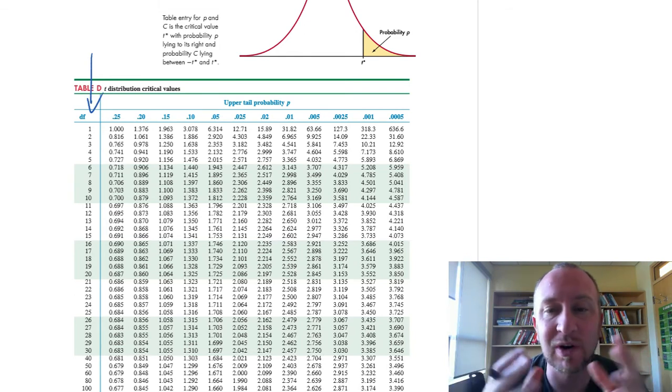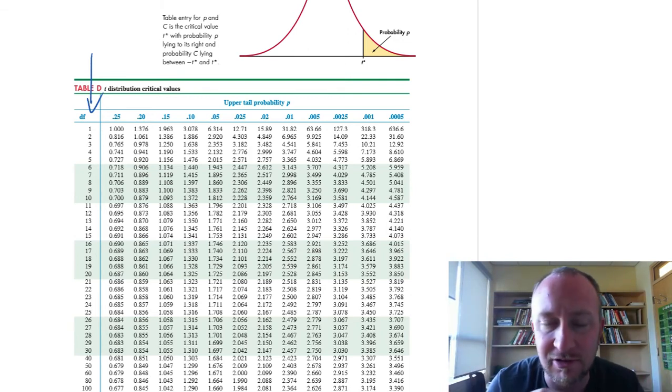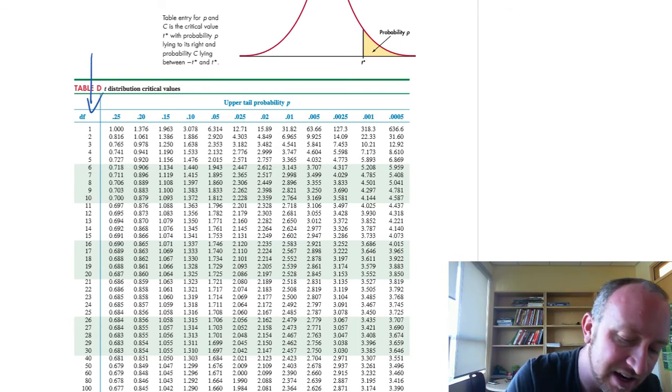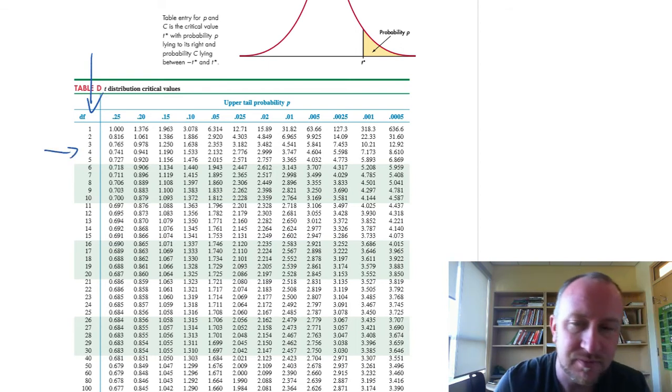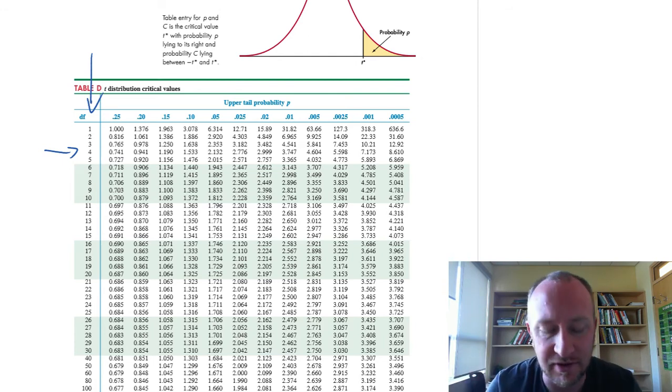Because again, there's only one z-distribution, so the whole table is full of information about that one distribution. Now, every one of these rows corresponds to a slightly different variant of the t-distribution.